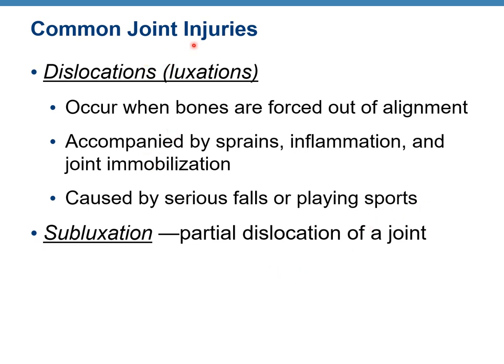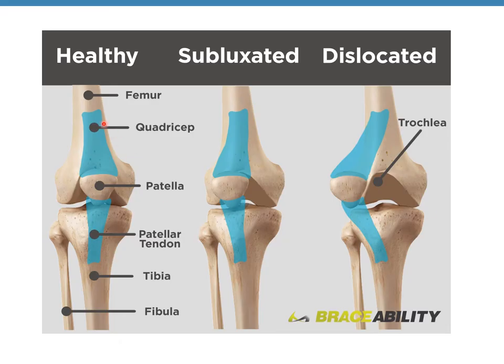Other common injuries include luxation and subluxation. Luxation is dislocation — it occurs when bones are forced out of alignment, accompanied by sprains, inflammation, and joint immobilization, caused by serious falls or playing sports. Subluxation is a partial dislocation of the joint. Here you can see a healthy joint, a subluxation, and a full luxation or dislocation.